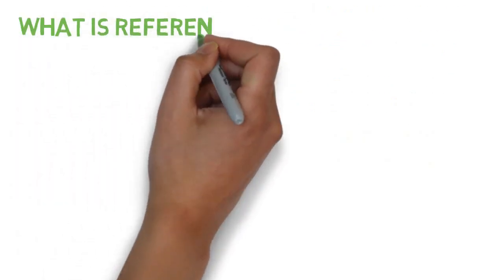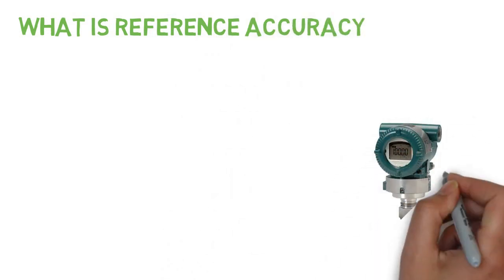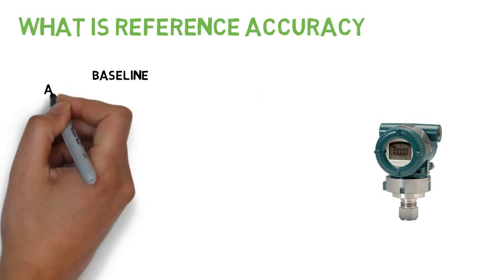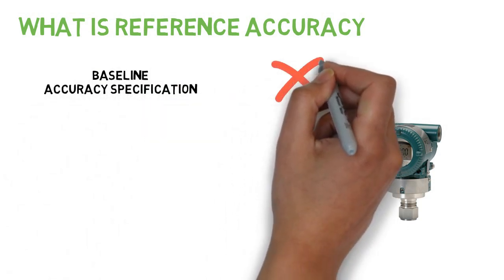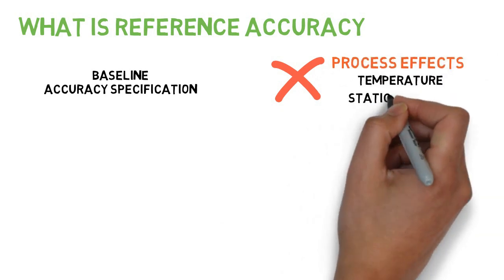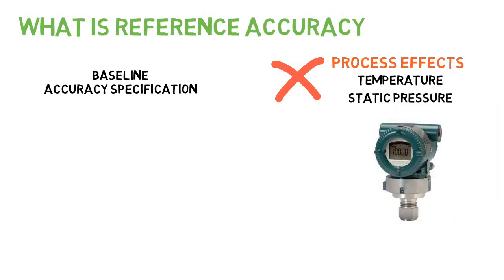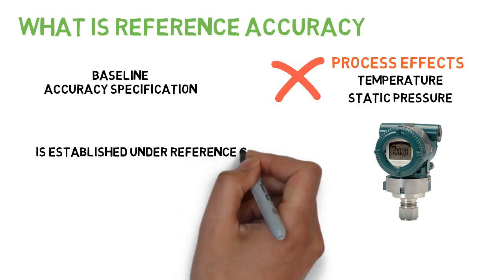What is reference accuracy? Reference accuracy is a baseline accuracy specification that does not include process effects such as temperature and static pressure effects. Reference accuracy is established under reference conditions.